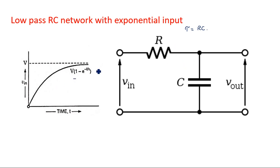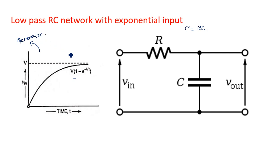Don't confuse the two time constants. The time constant of the signal comes from the signal generator — internally the generator has a resistance and capacitance, giving it a time constant tau. Our network time constant is different: tau is equal to RC.